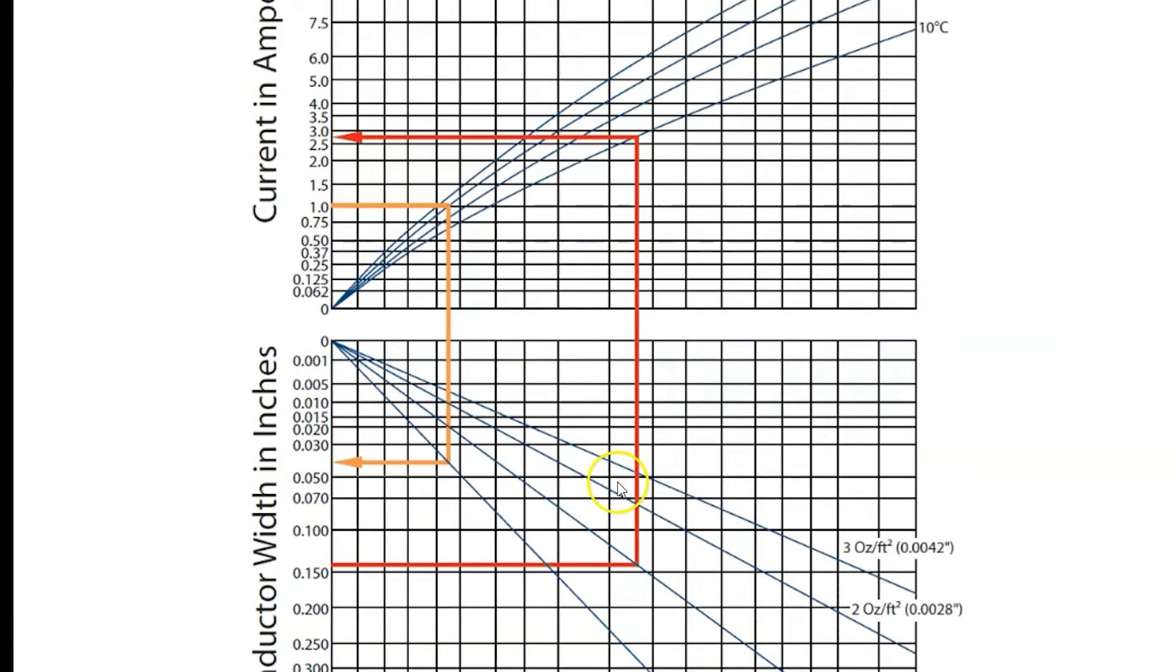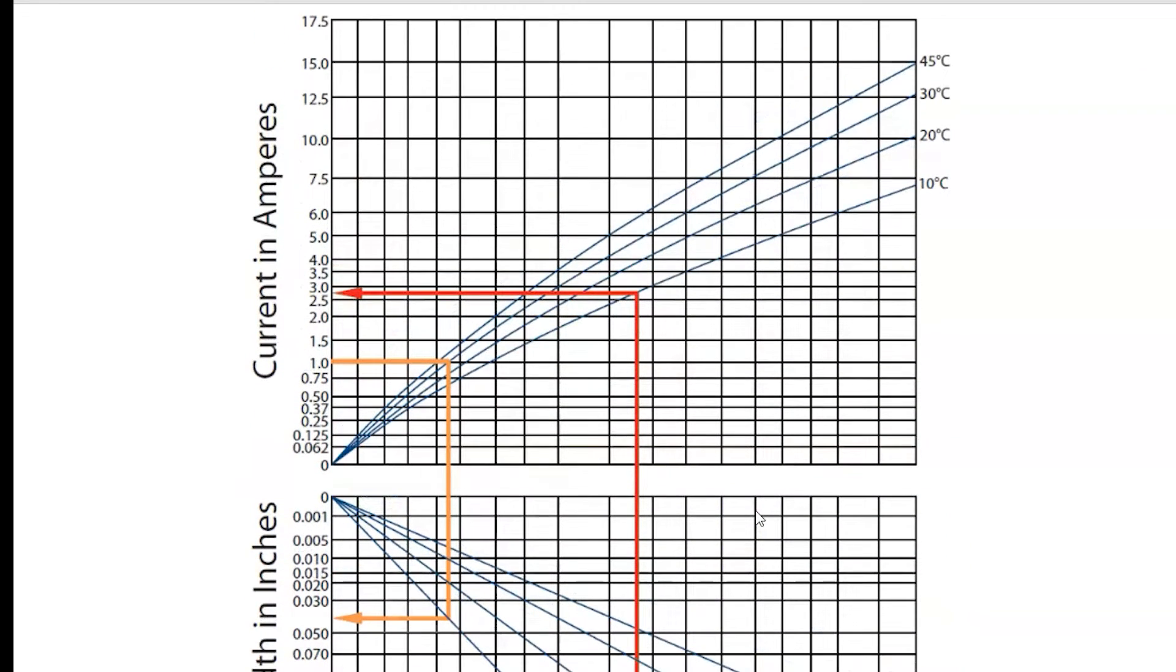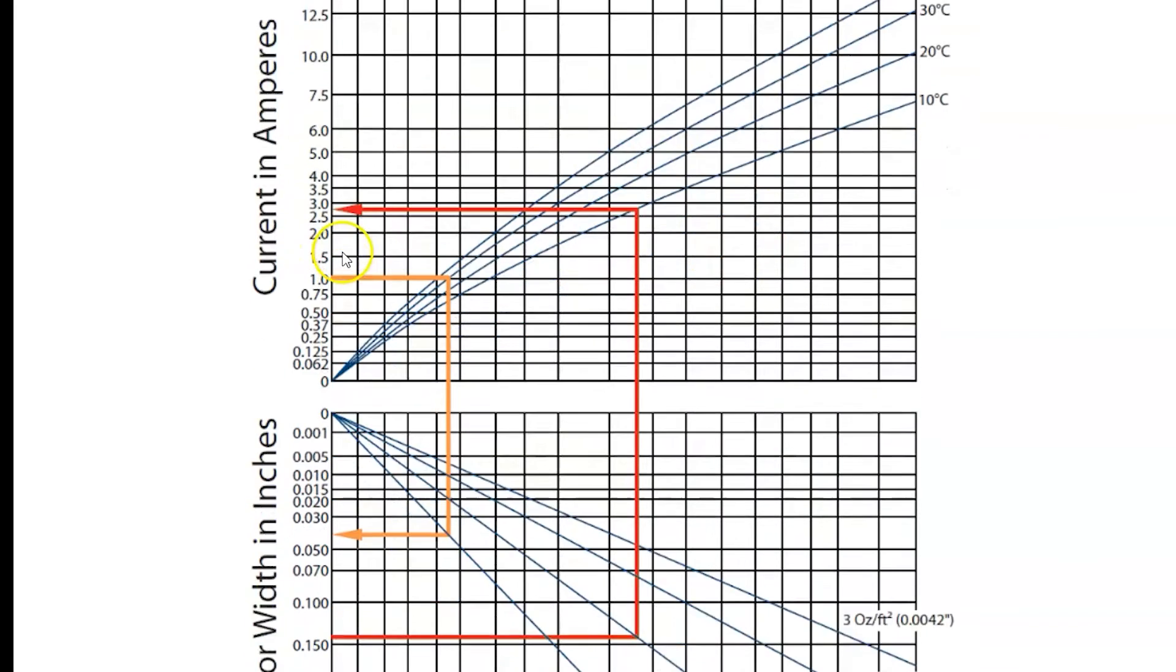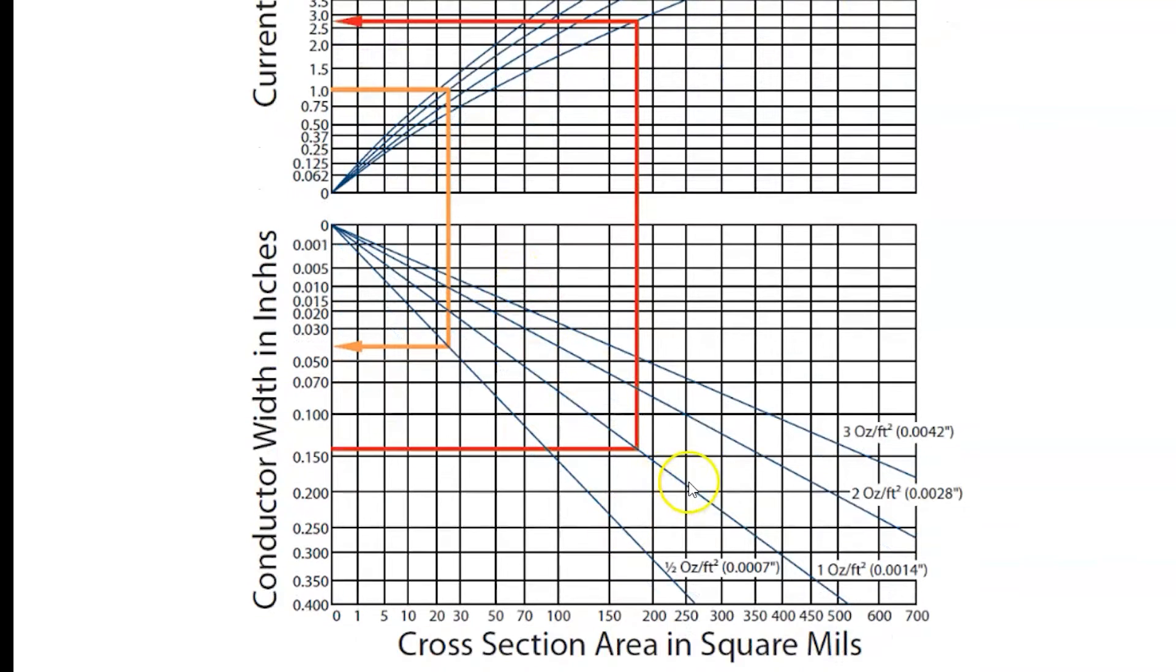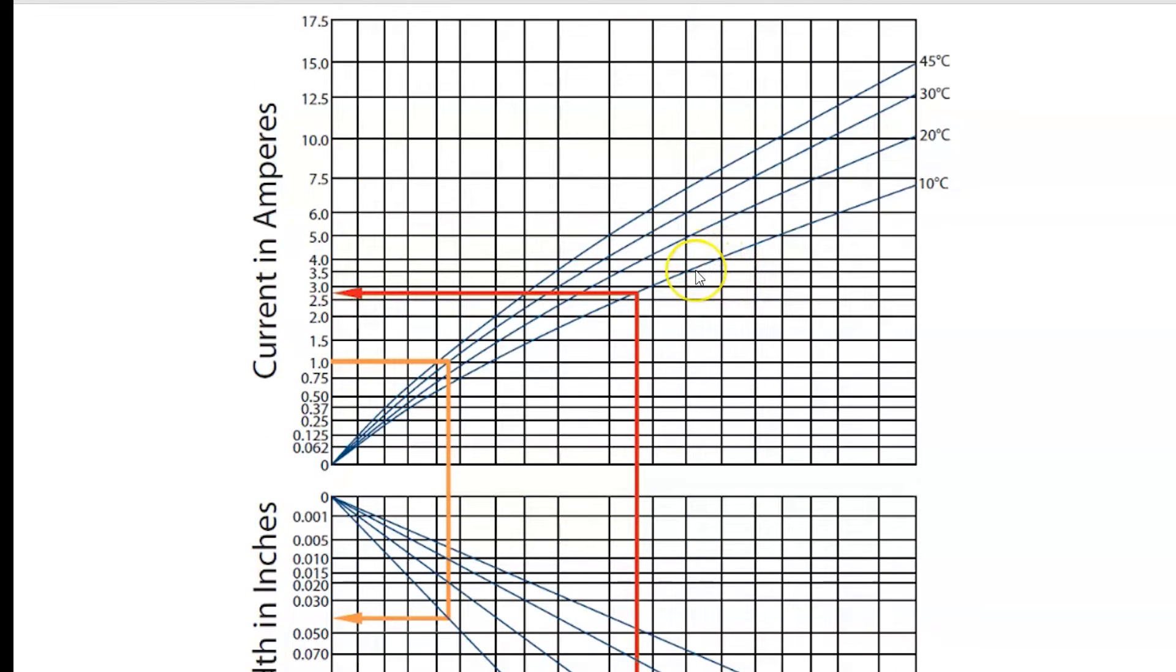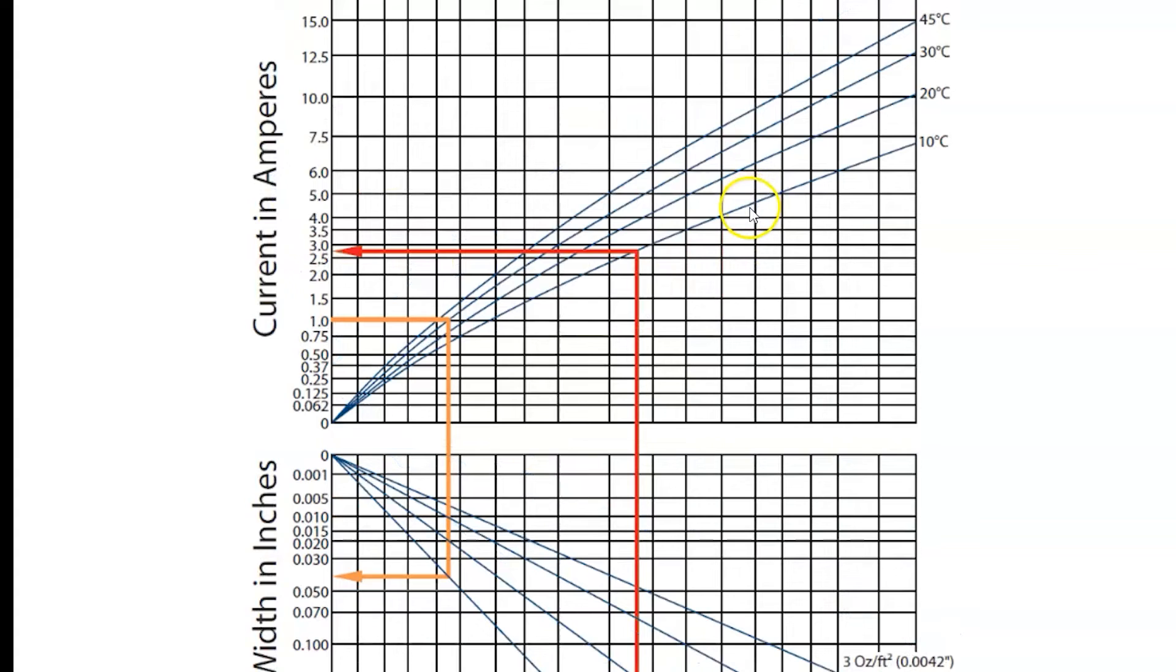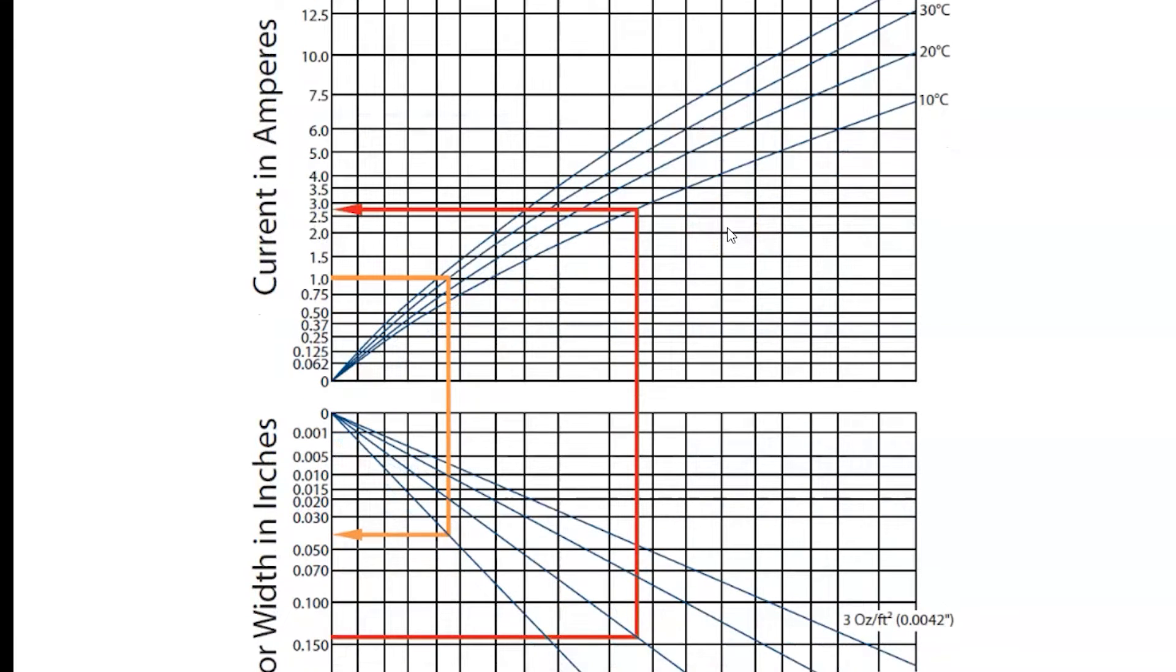Okay, so what you can immediately see or you should be able to immediately see is that for a given conductor width, if I go over to a higher copper weight and then I trace up to a given temperature rise, so here at 10, I could carry a larger current just like what I would expect. Okay, so this is kind of our justification or at least our experimental justification for using heavier copper to carry higher current. That all makes sense. So the article that we'll link to the description actually has this particular graphic in it. You can use that as your own starting point for estimating the current that a conductor can carry.